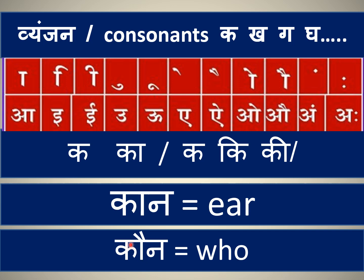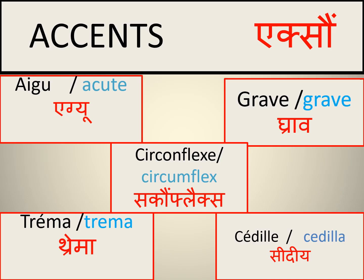In the same way, French accents change the sound or they change the meaning of the word. Now let's see how many accents are there in French. There are five accents. The word 'accent' in French is pronounced 'exo.'